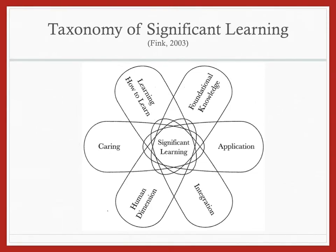In this presentation we'll go over Fink's Taxonomy of Significant Learning and then we'll talk about how to write learning goals. As you can see on the slide, there are six different levels in the Taxonomy of Significant Learning from Fink. The whole point of any of these is that we create a significant learning experience in our course or in our lesson. We can apply information from course design to lesson design as well.